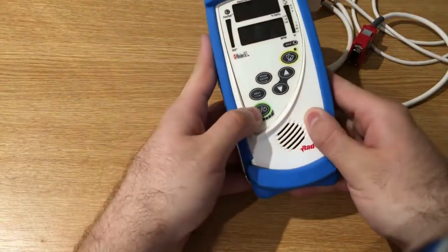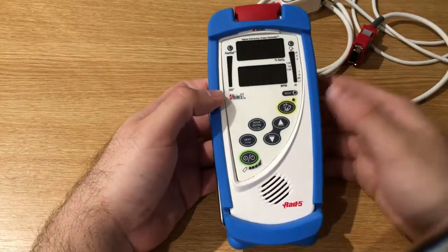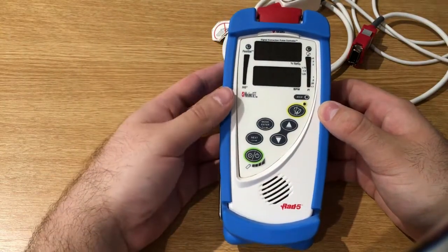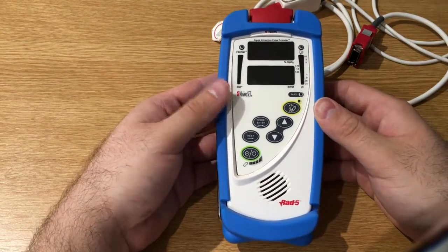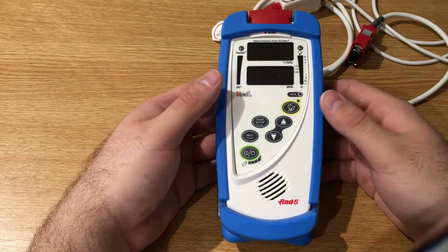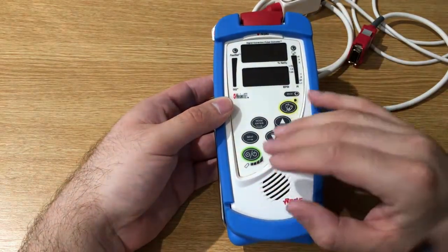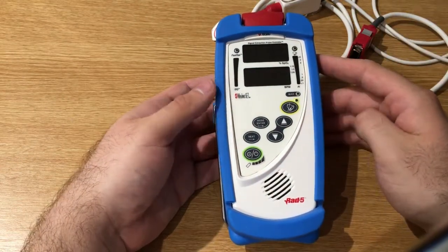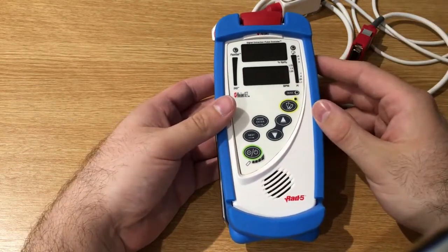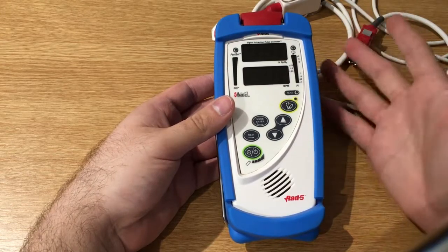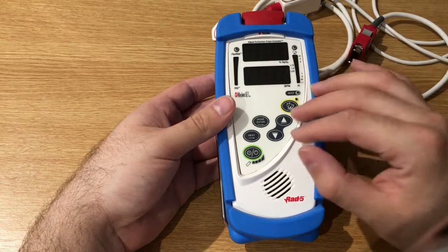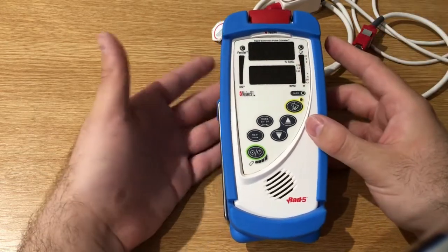Obviously the Radical 7 has a much more easier and intuitive interface. This doesn't have the gorgeous touch screen that the Radical 7 has.